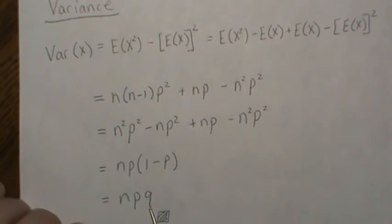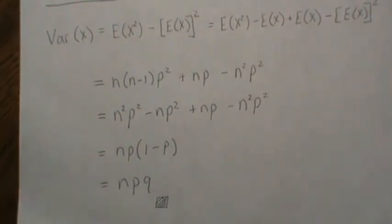And then we're left with 1 minus p. And then that is what we call q. So npq is the variance of a binomial.